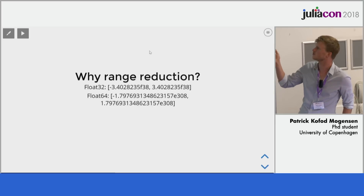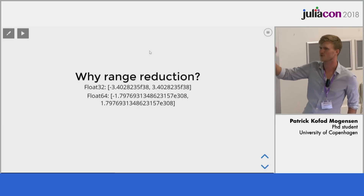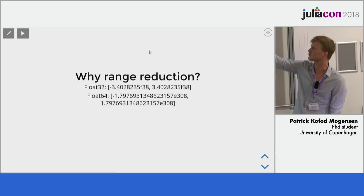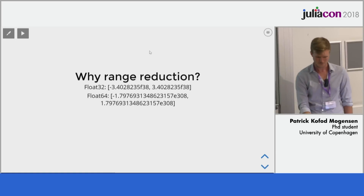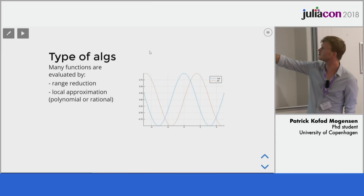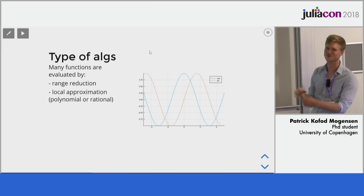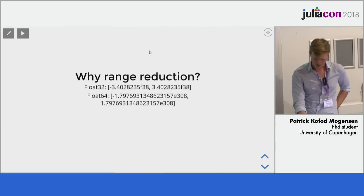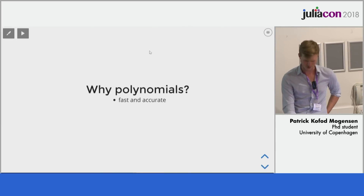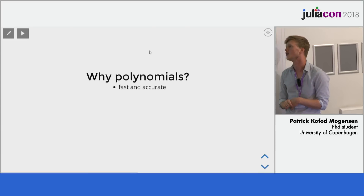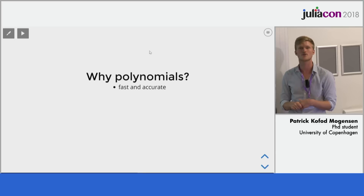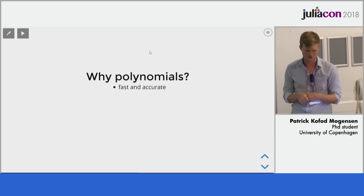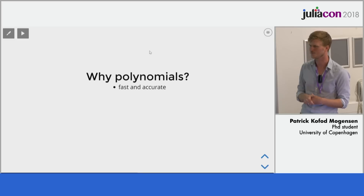To see why we want to do range reduction: these are the smallest and largest finite numbers in the Float32 and Float64 number types. If you want to evaluate the sine from the lowest to the largest, you need a very high order polynomial to fit that, and that's not going to be a good idea. So we want to reduce it to a smaller range, and then use polynomials or rationals, because they can be evaluated quickly and accurately on our computer using special algorithms for evaluating polynomials given the coefficients.